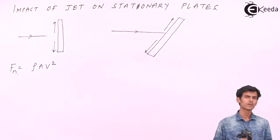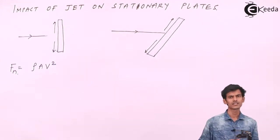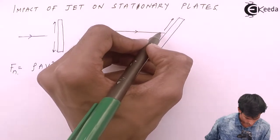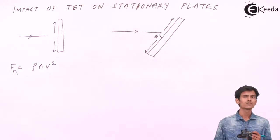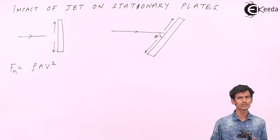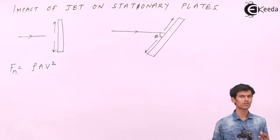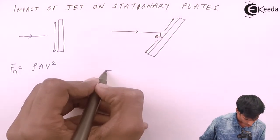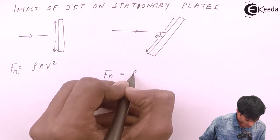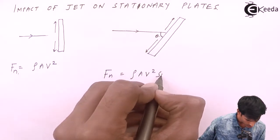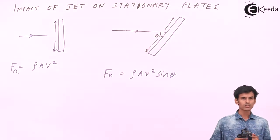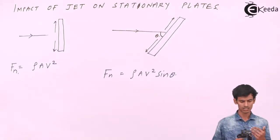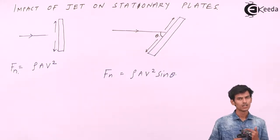Next is the case of a plate inclined at a certain angle. Let's take the angle as theta, where theta is the angle made by the jet with the plate. We have already derived the formula for the normal force exerted on the plate due to the jet. The normal force comes out to F_n = ρAV²·sinθ.